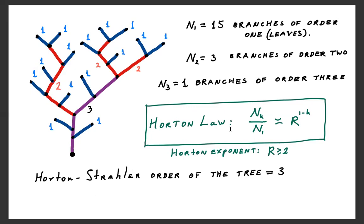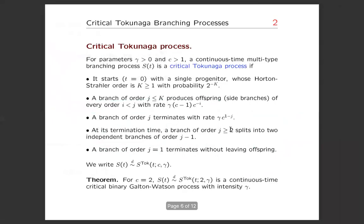The process is called the critical Tokunaga process. It's a process where there are two input parameters: gamma greater than zero, and c greater than or equal to one, the Tokunaga exponent.